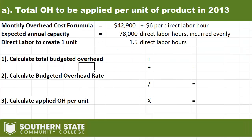On part A, we need to determine the total overhead to be applied per unit of product in 2013. Here's the information given: a cost formula of $42,900 plus $6 per direct labor hour — keep in mind that is a monthly amount. We're also given the annual capacity in direct labor hours incurred evenly throughout the year, and that making one unit requires one and a half direct labor hours.